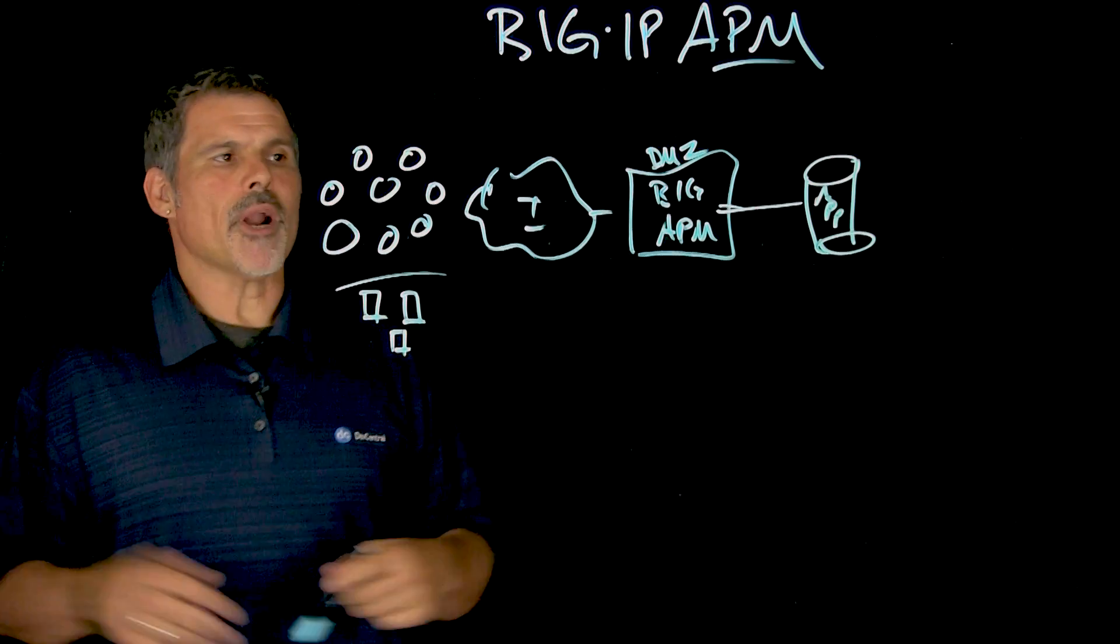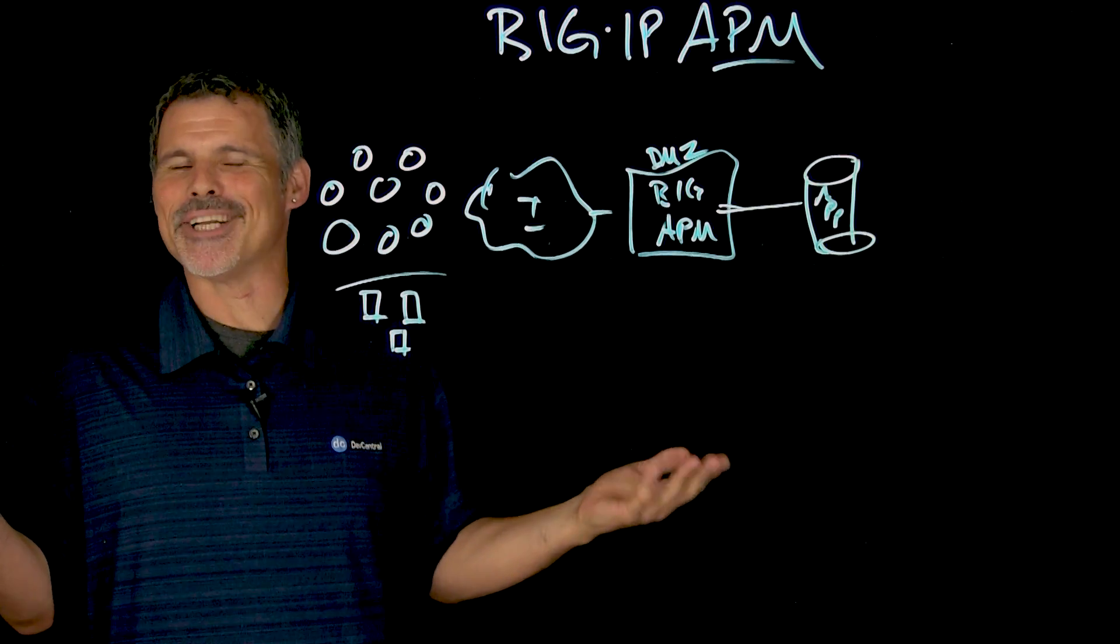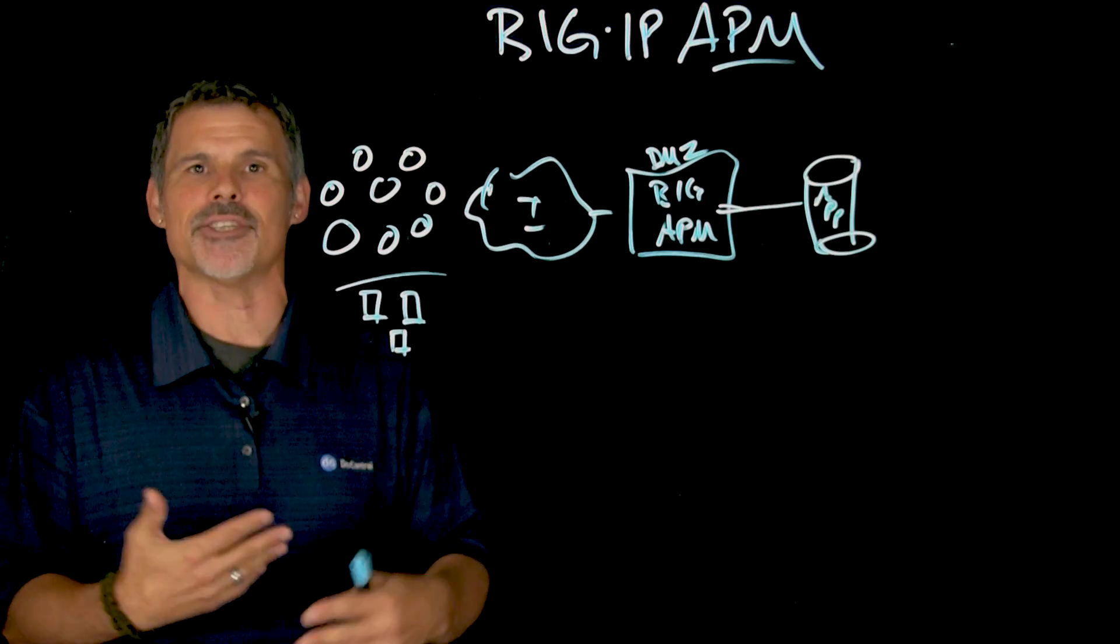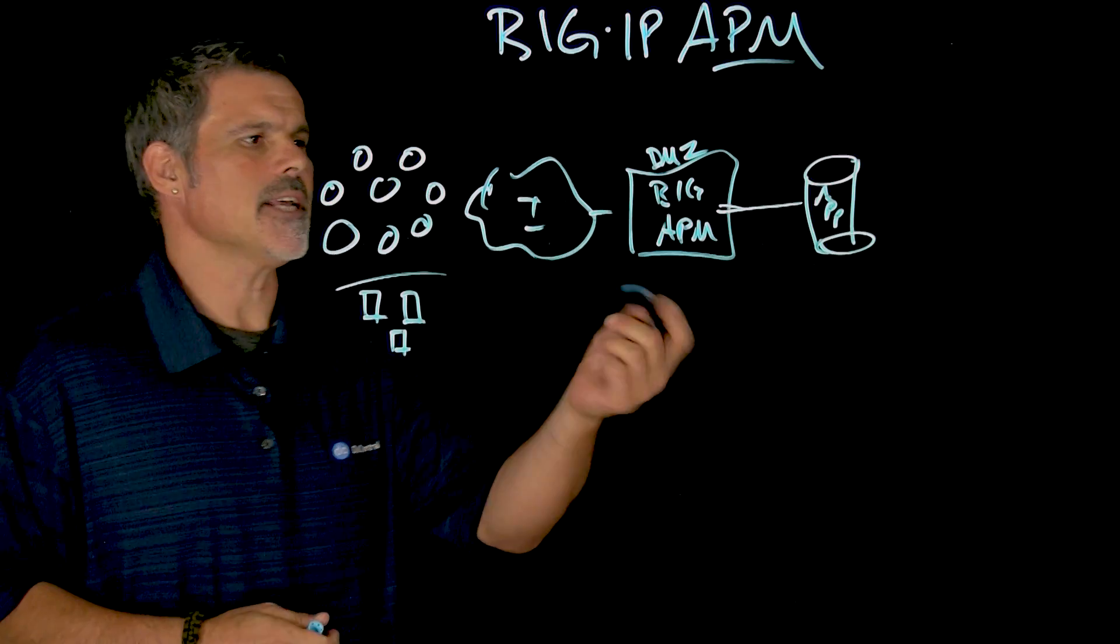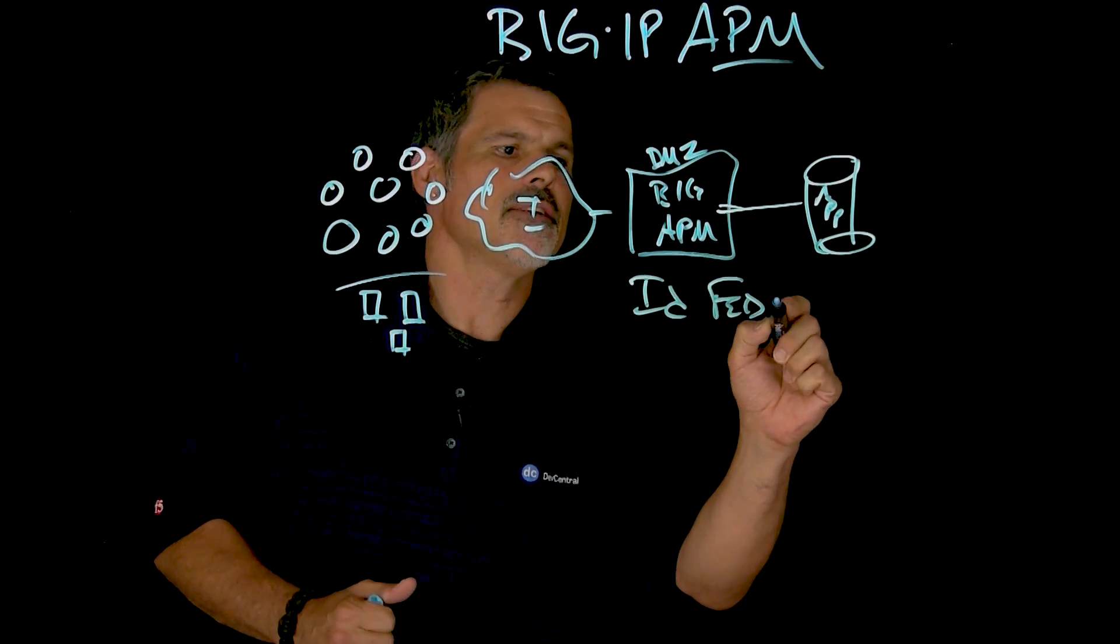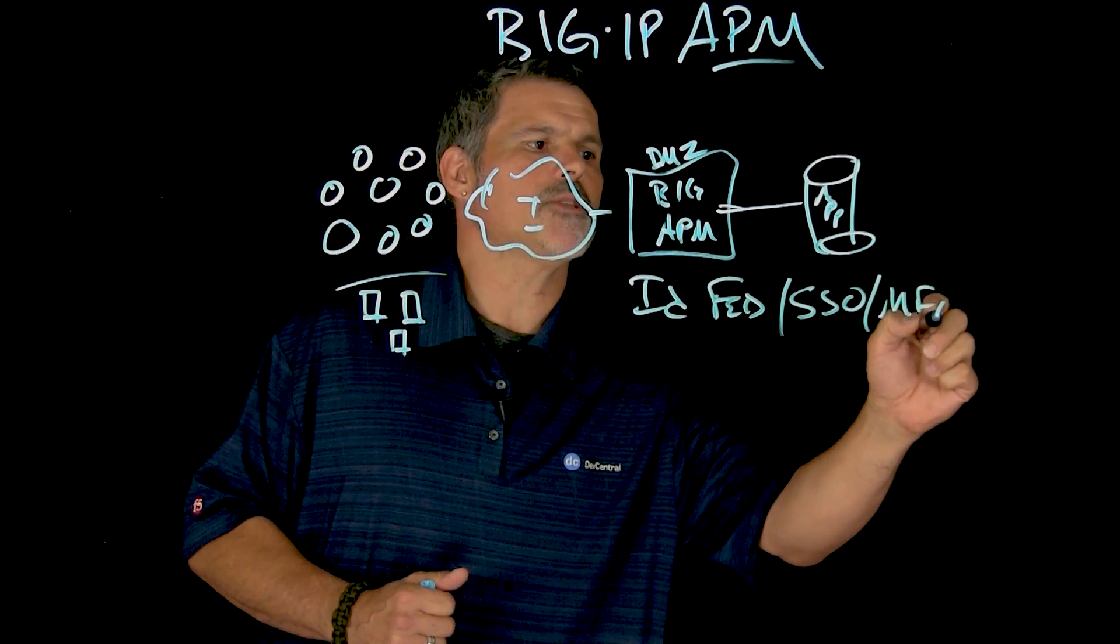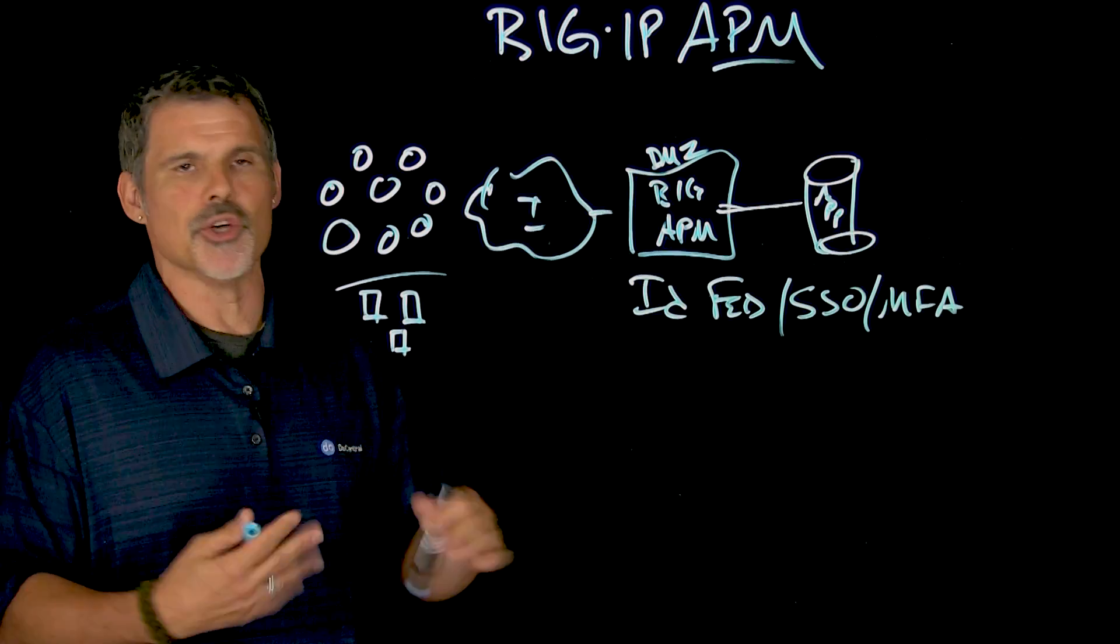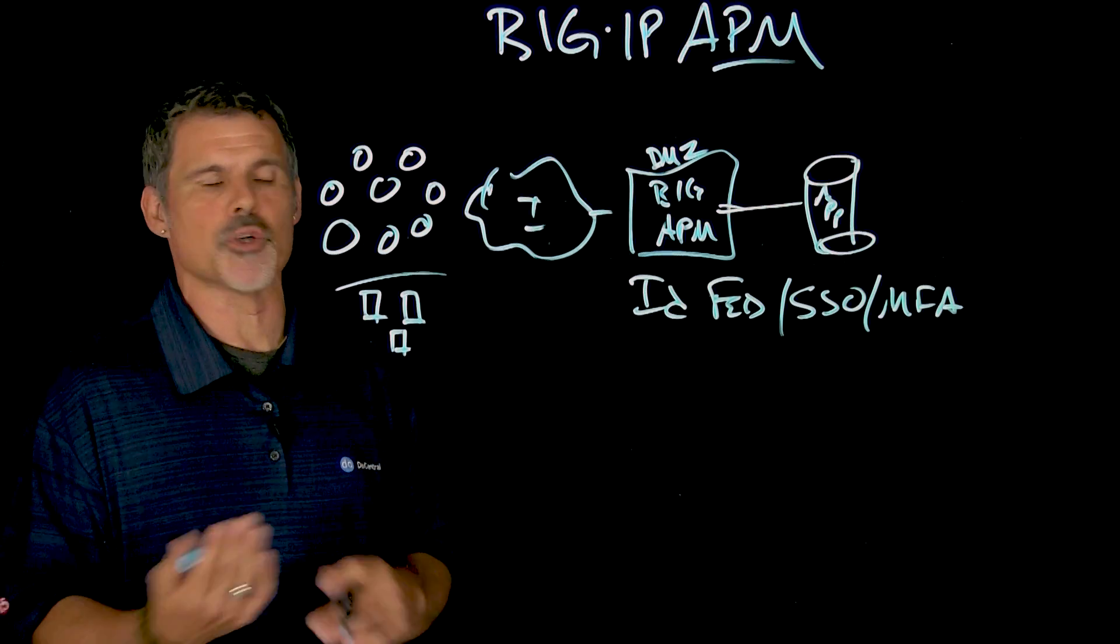So first off, one of the things that Big IP Access Policy Manager does, and the name kind of already describes what it does, access policy, creating policies to provide access to users. And so the first things that it can do is provide identity federation, single sign-on with things like multi-factor authentication, or two-factor authentication, username, password, plus a token, or a push notification over to a mobile device.